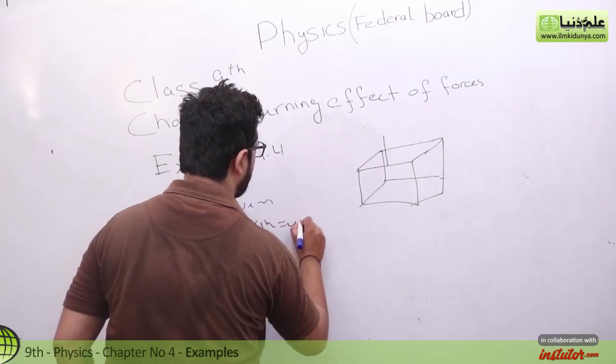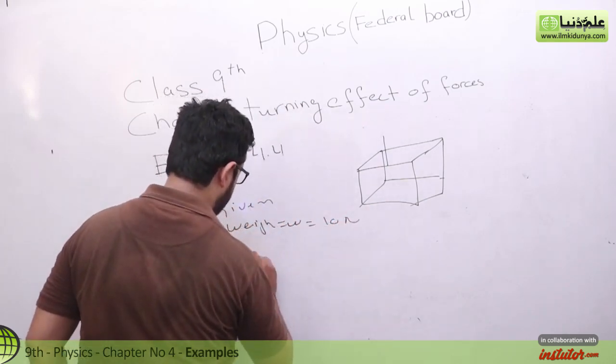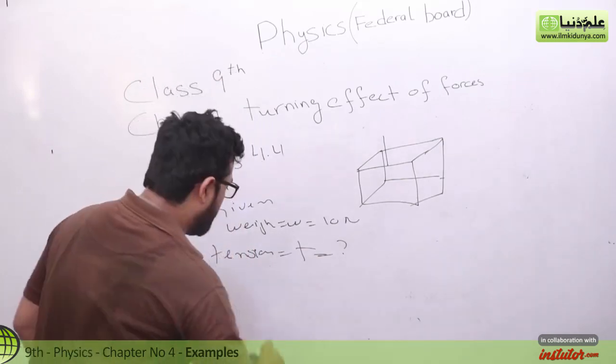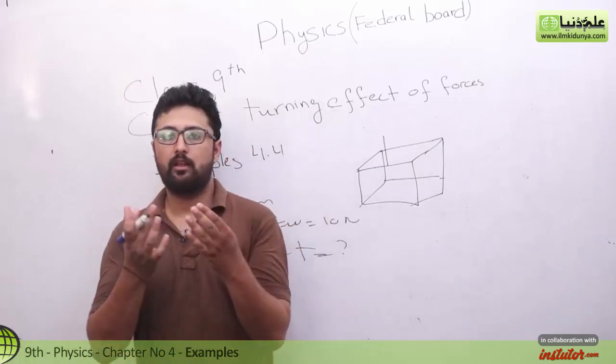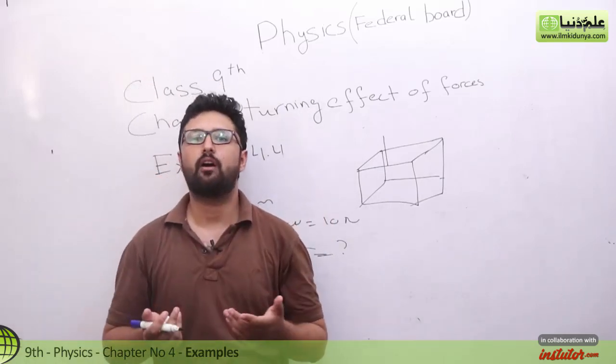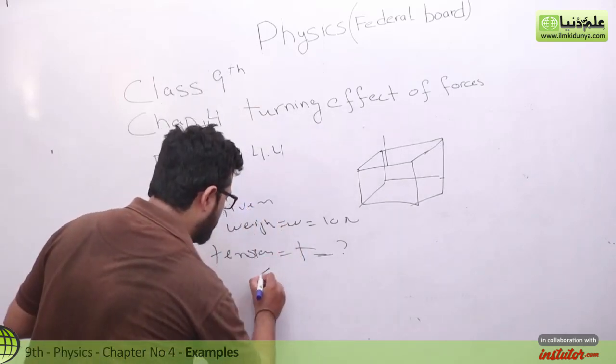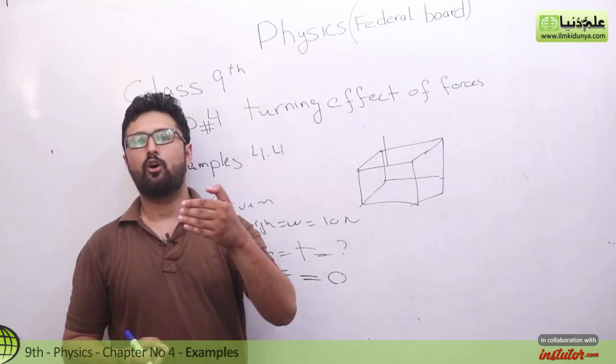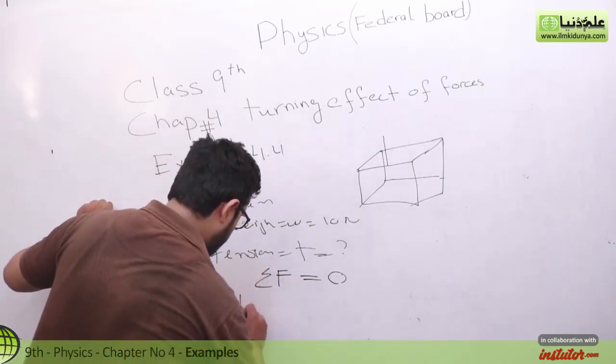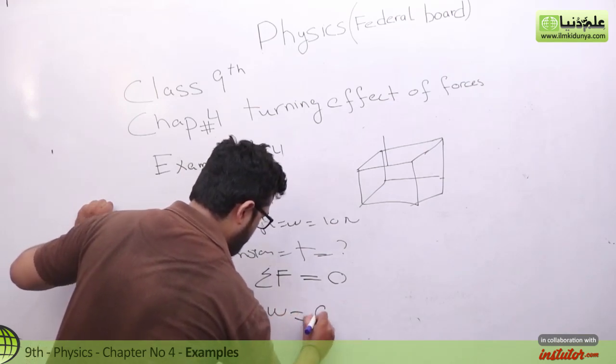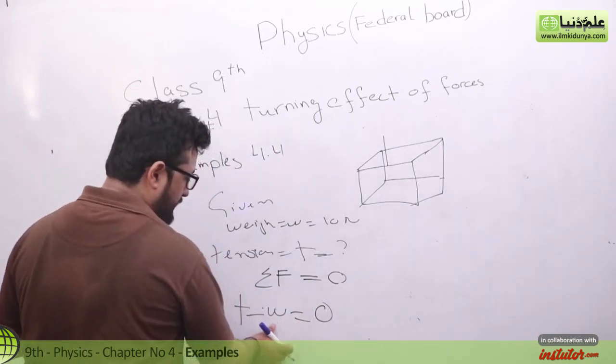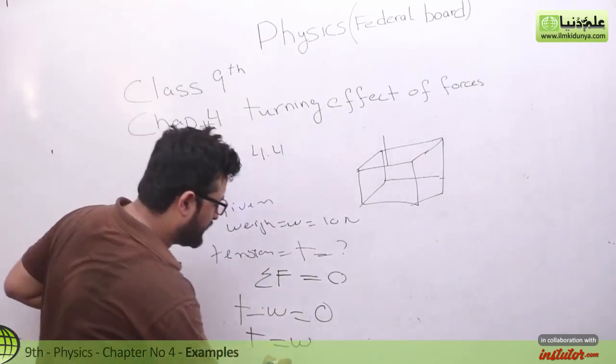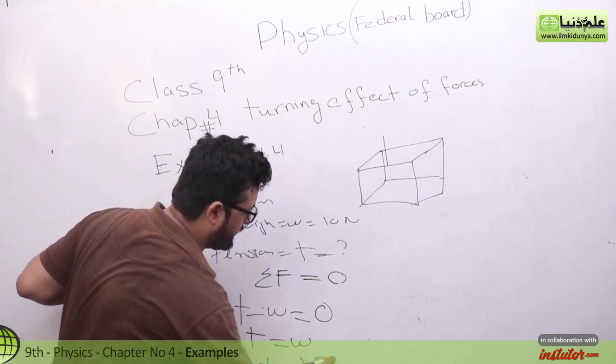We have to find the tension we have to find. Given, we have weight 10 N, we have to find tension. We have to find. We know that when the sum of all forces is equal to 0, when the sum of all forces is equal to 0, when the tension and the weight is cancelled, we cancel. W here minus plus tension is equal to w. Tension is equal to w and w what is we have 10 N. So this was very easy example.